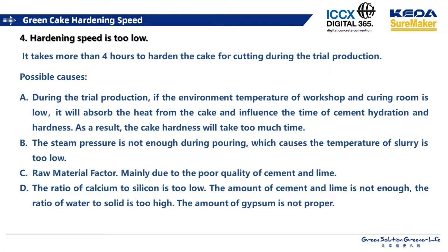During slurry production, sometimes we find it takes more than 4 hours to harden the cake for cutting. If the environment temperature of the workshop and the curing room is low, it will absorb heat from the cake. Finally, this will influence the time of cement hydration and hardness. As a result, the cake will take too much time to reach the required hardness.